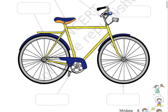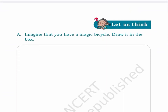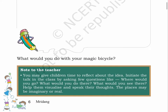Page 6. Let us think. A. Imagine that you have a magic bicycle. Draw it in the box. Here on page number 6, there is a blank box given to draw an image of a magic bicycle. What would you do with your magic bicycle? Note to the teacher: You may give children time to reflect about the idea. Initiate the talk in the class by asking questions like: Where would you go? What would you do there? What would you see there? Help them visualize and speak their thoughts. The places may be imaginary or real.